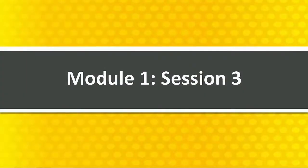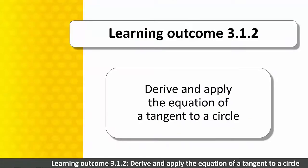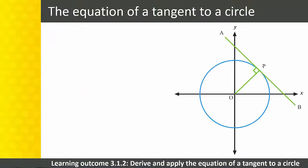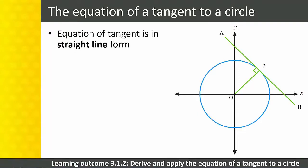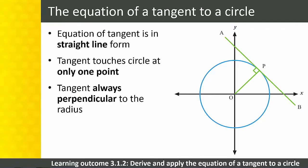Module 1, Session 3 covers Learning Outcome 3.1.2: derive and apply the equation of a tangent to a circle. A tangent is a straight line with an equation in the usual straight line form. The tangent touches the circle at exactly one point. A radius can be drawn to this point and it will always be perpendicular to the tangent.